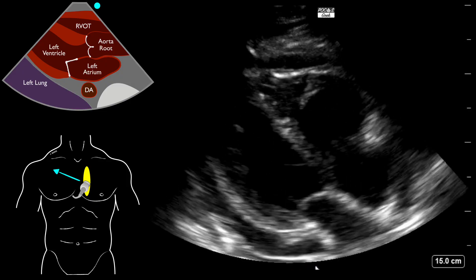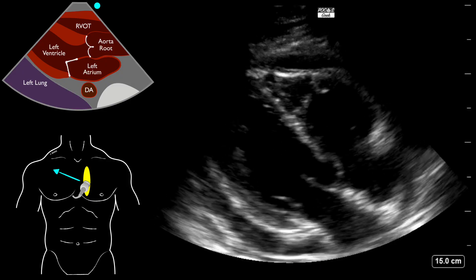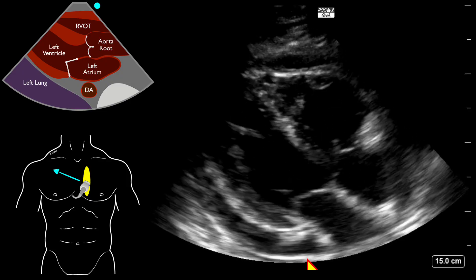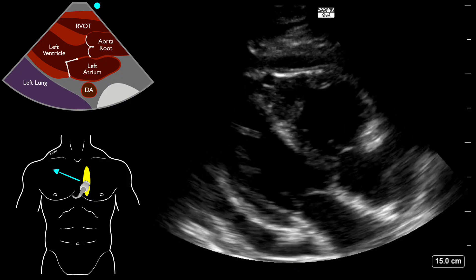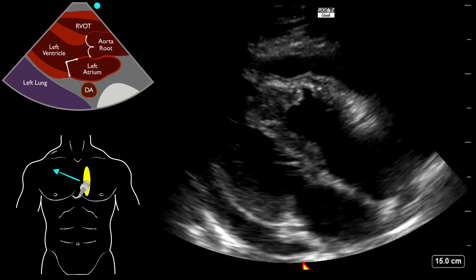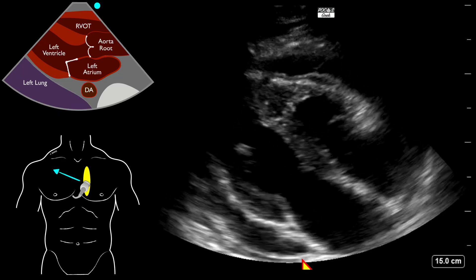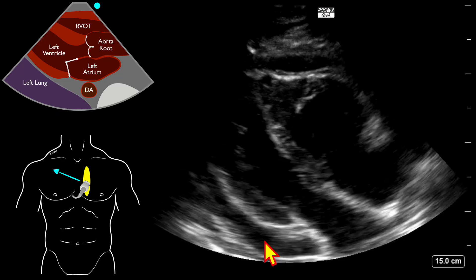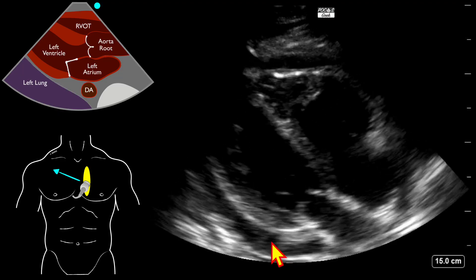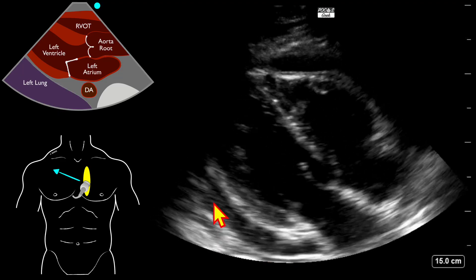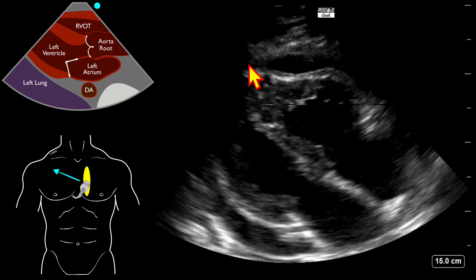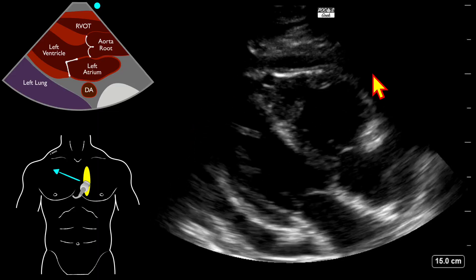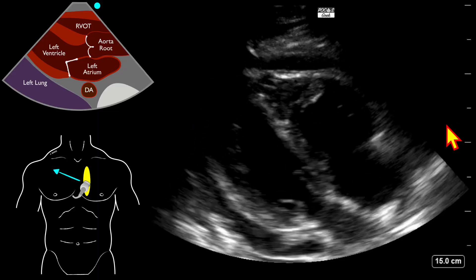We don't see the descending aorta. It would be nice if they had increased their depth at the bottom of the screen. But we can see a pericardial effusion along the left ventricle, and it does appear to be circumferential.